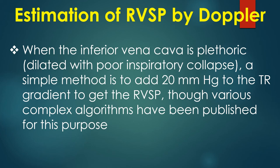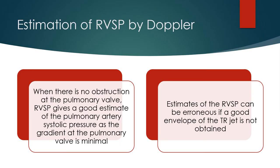Though various complex algorithms have been published for this purpose, when there is no obstruction at the pulmonary valve, right ventricular systolic pressure gives a good estimate of the pulmonary artery systolic pressure, as the gradient at the pulmonary valve is minimal.